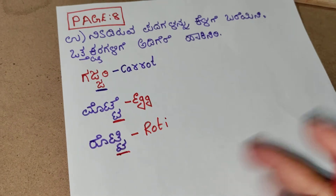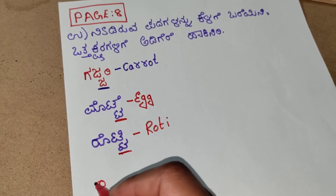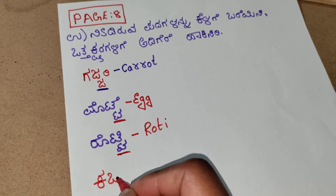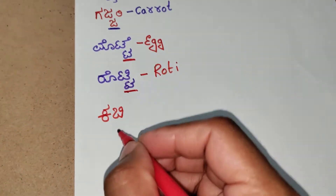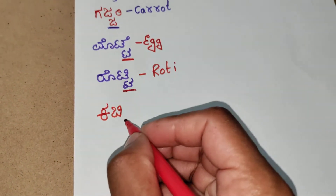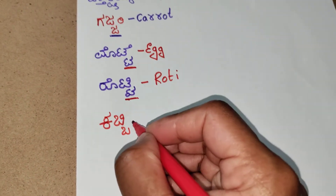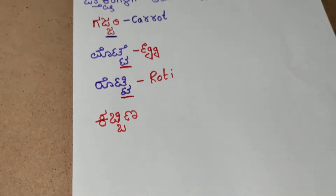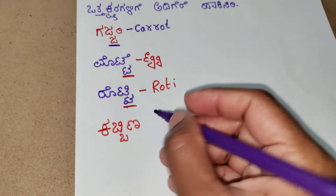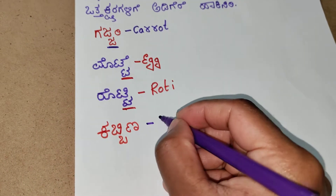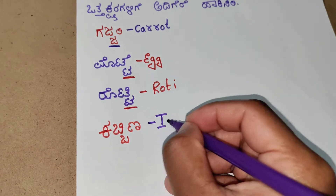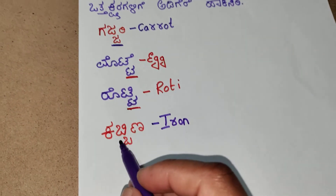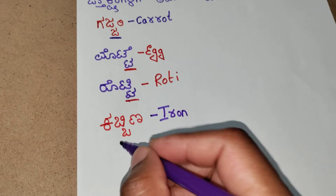The next word is kabina. Kabina — the meaning of kabina is iron. Here the otthakshara is bhavato.